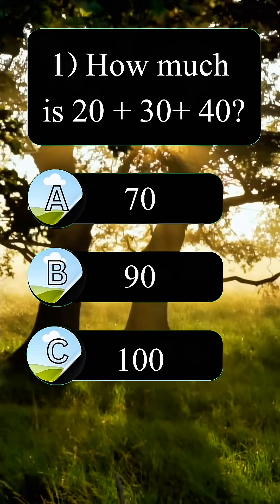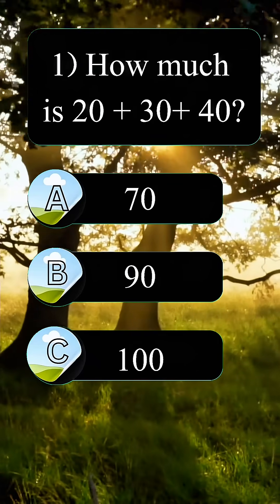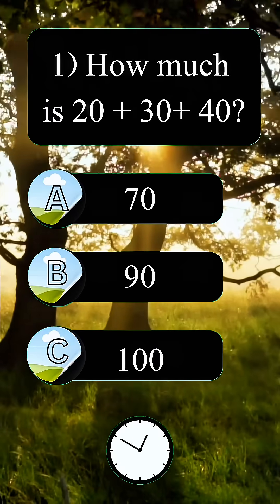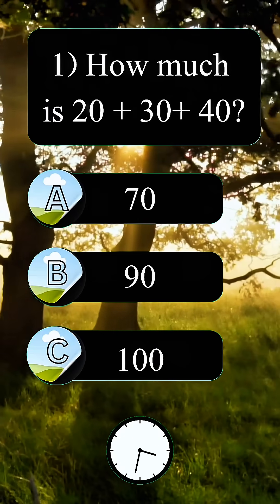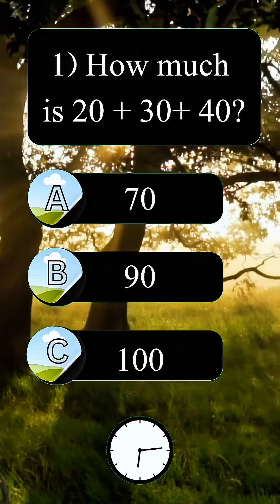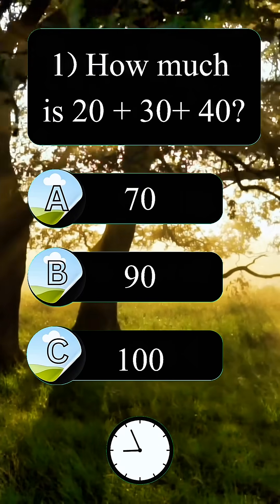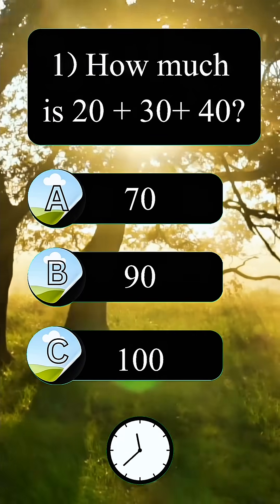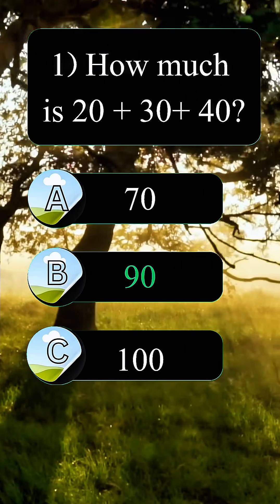Question 1. How much is 20 plus 30 plus 40? 90.